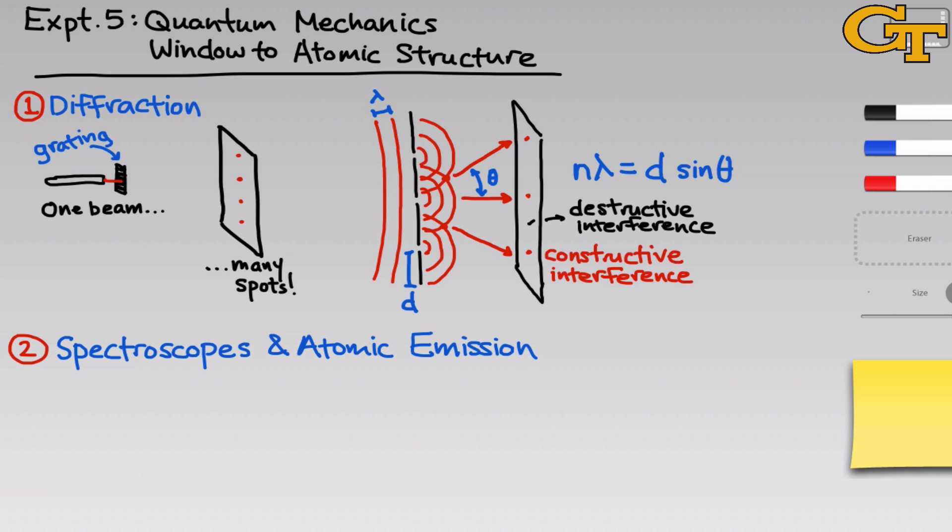In the second part of the experiment, we'll use spectroscopes and electric discharge lamps to look at the atomic emission spectra of a variety of atoms. We'll go into the hydrogen atom in detail, but I want to talk in general about the instrumentation and the theory first.